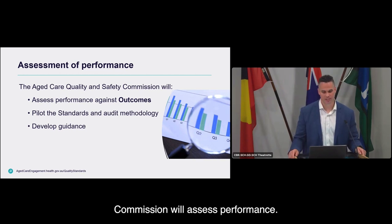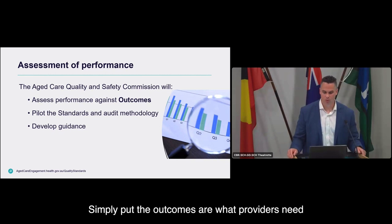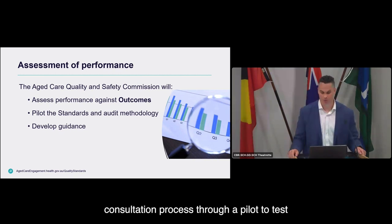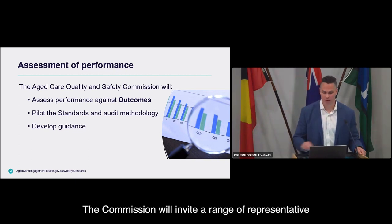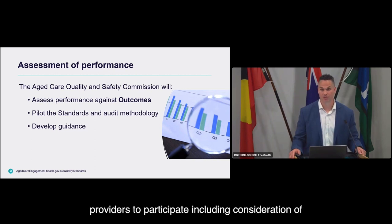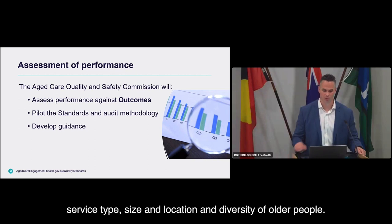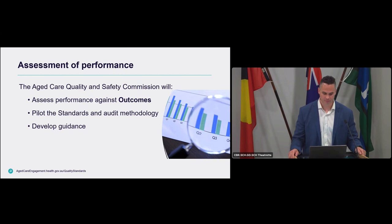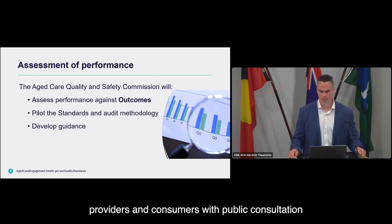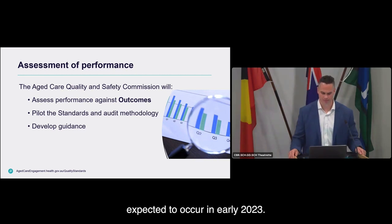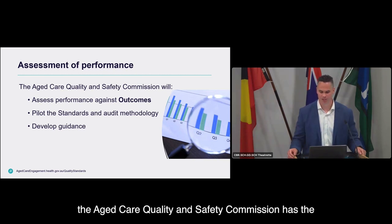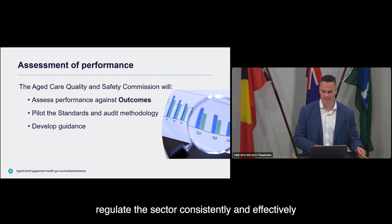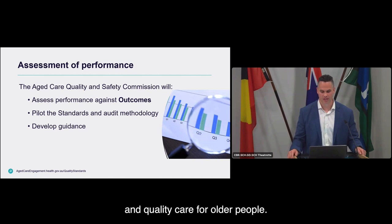The outcomes are what providers need to meet, and the actions are how providers might meet the outcomes. This will be tested through the public consultation process through a pilot to test a redesigned audit methodology. The Commission will invite a range of representative providers to participate, including consideration of service type, size, location and diversity of older people. The pilot findings will inform revisions to the standards, the audit methodology, and the development of guidance for providers and older people. This work is critical to ensure the Aged Care Quality and Safety Commission has the processes, tools and guidance to regulate the sector consistently and effectively.